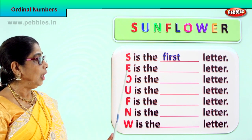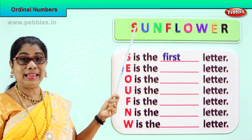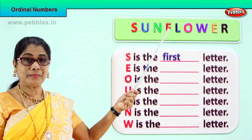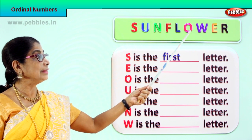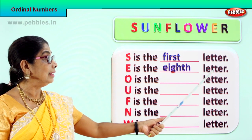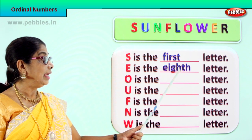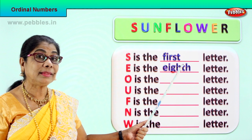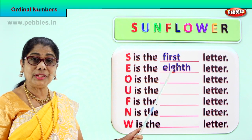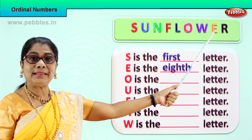What about E? We have letter E in sunflower. Where is E? Here is the E. Let's say which position — first, second, third, fourth, fifth, sixth, seventh, eighth. Letter E in sunflower is the eighth letter. It is the eighth letter. Spell eighth: E-I-G-H-T-H. Eighth. How do you say eighth? You add on TH. Please say the spelling with me: E-I-G-H-T-H. Eighth.